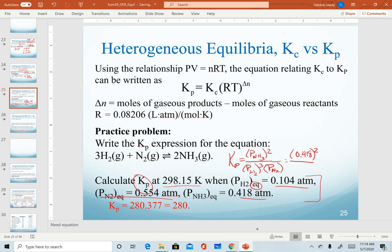So ammonia has a value of 0.418. Remember that I am calculating an equilibrium constant, which means it's going to be unitless, so I don't have to include the unit in here. Pressure of hydrogen is 0.104, and that will be cubed, and the pressure of nitrogen is 0.554.